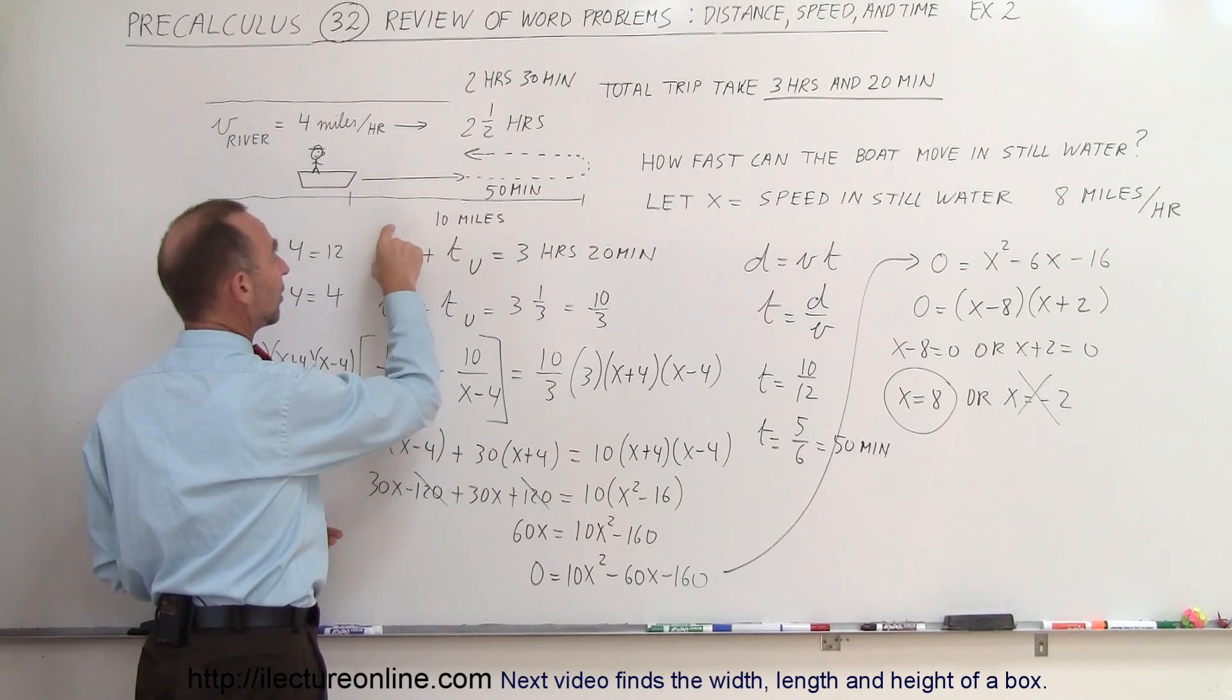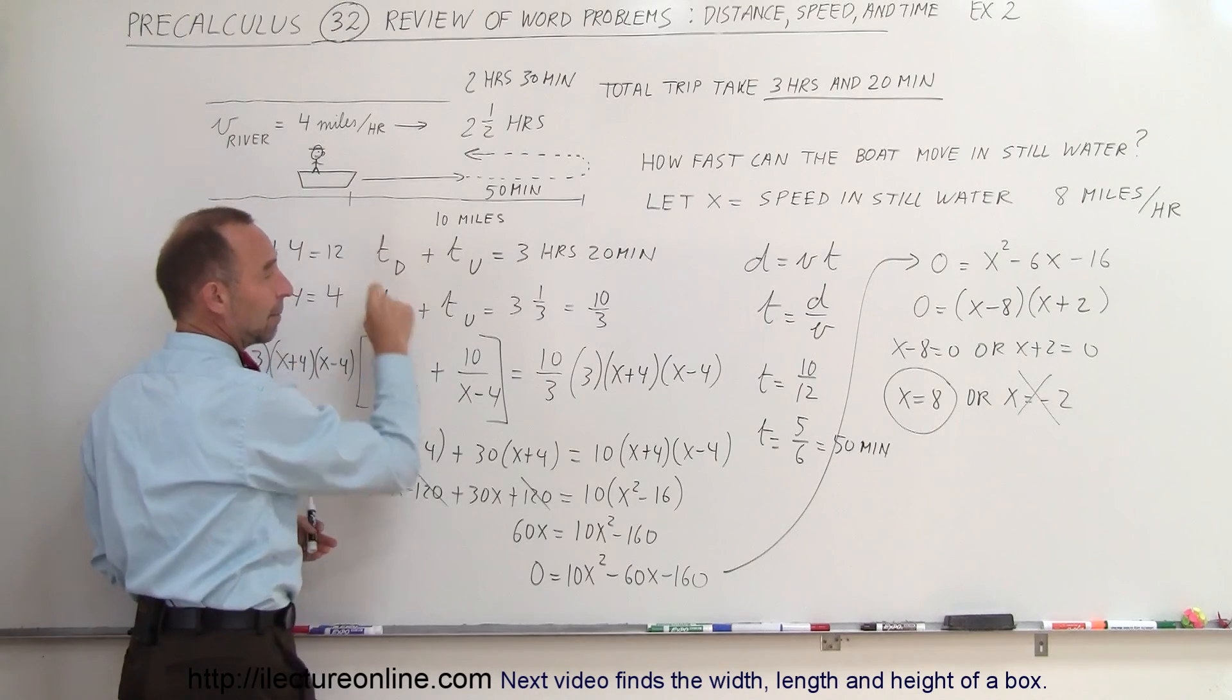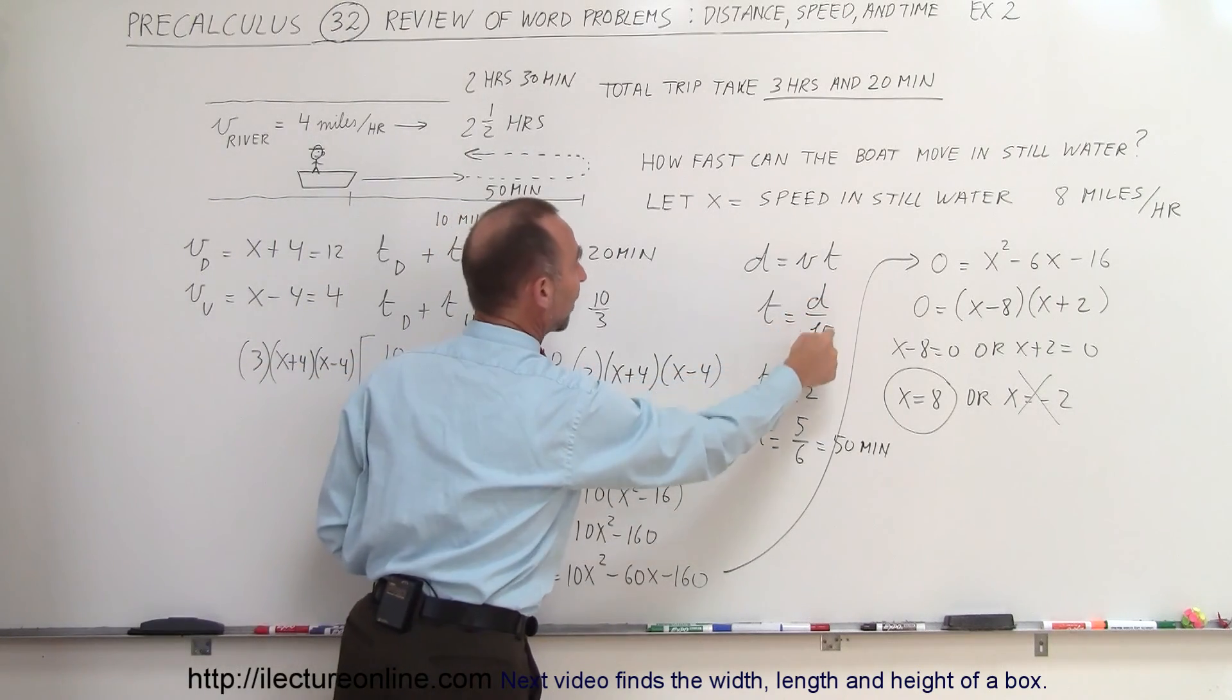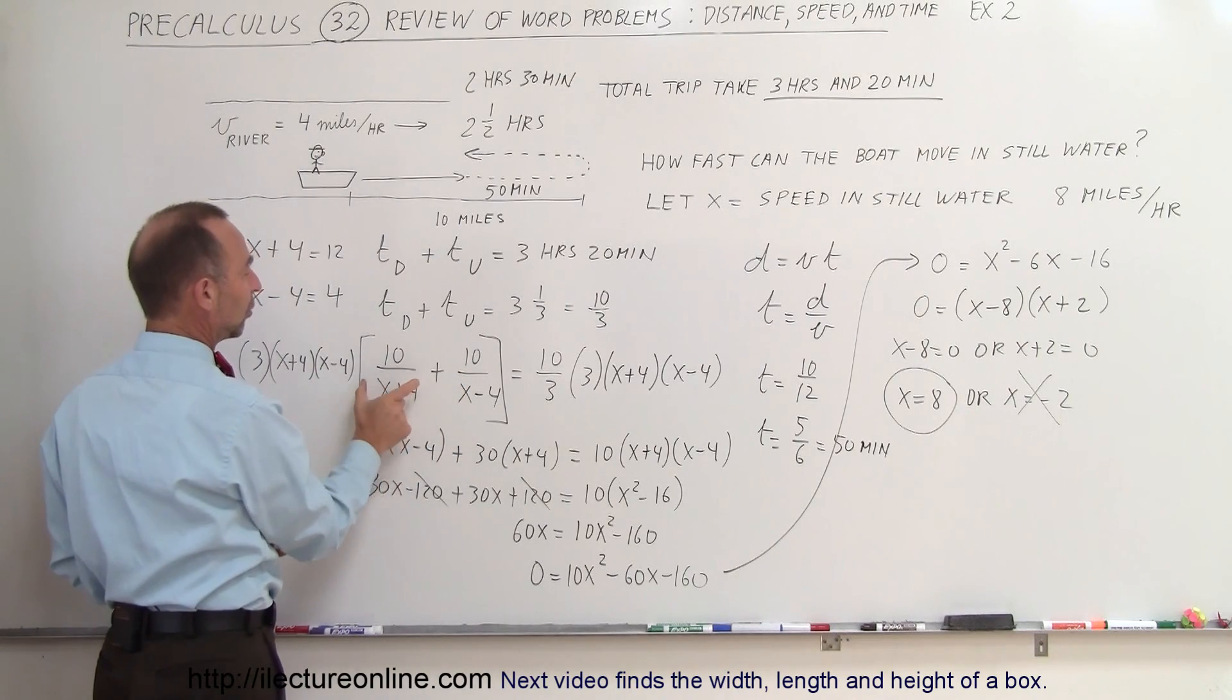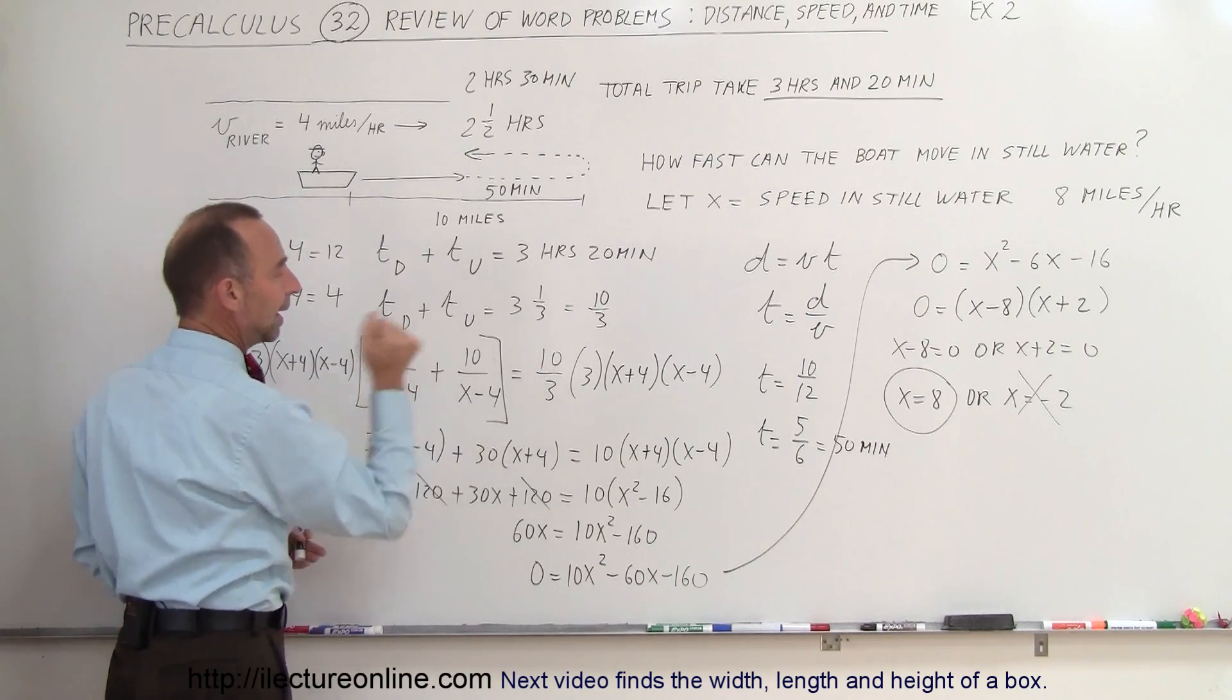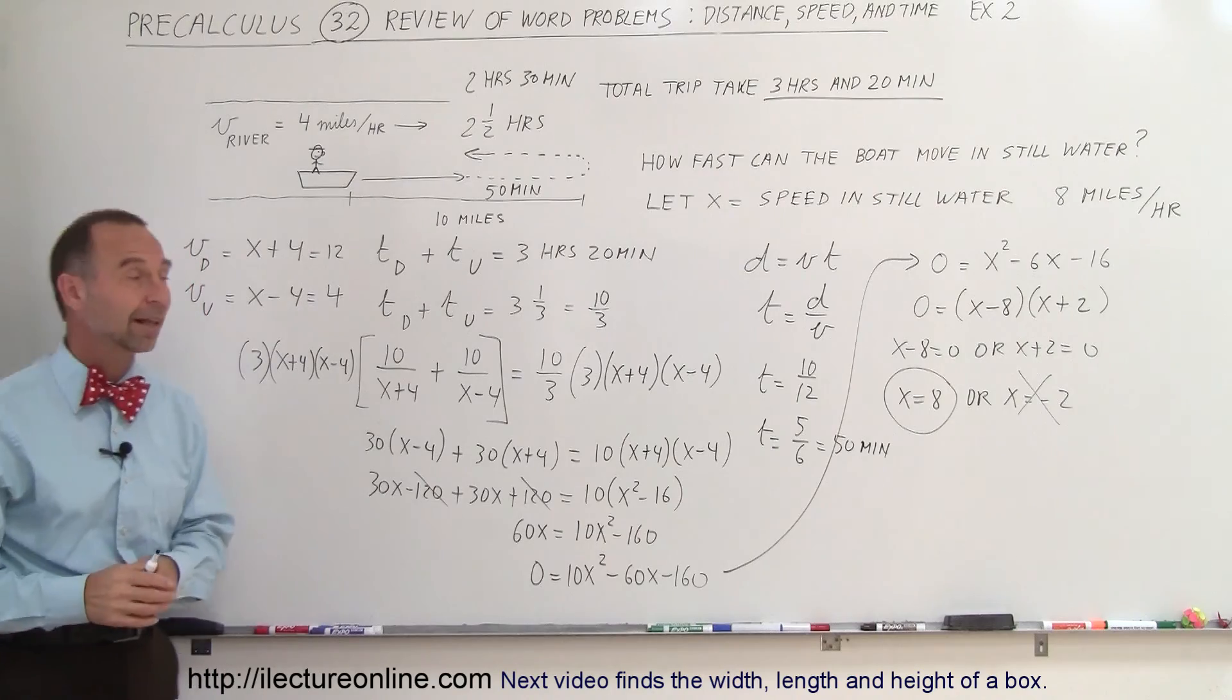Then you replace the expression for time by what time is equal to, which is distance divided by velocity. Distance divided by velocity in each case, downstream and upstream, and then you solve the quadratic equation, and that's how we do that.